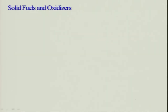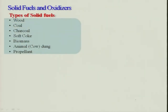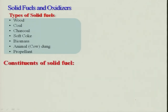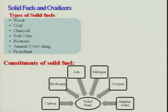Looking at solid fuels and oxidizers: there are various kinds including wood, coal, charcoal, soft coke, biomass, animal dung, and propellants. The constituents of solid fuels include carbon, hydrogen, ash, nitrogen, oxygen, sulfur, and water content.